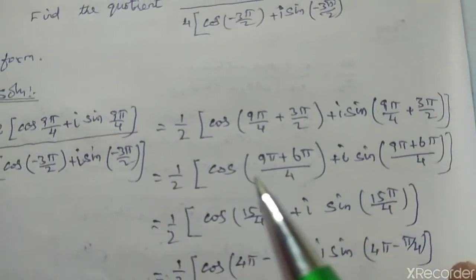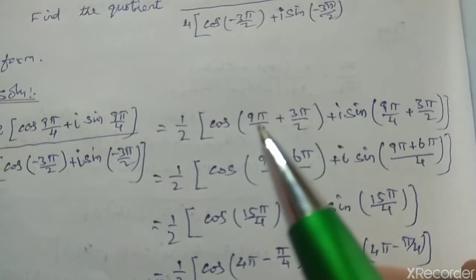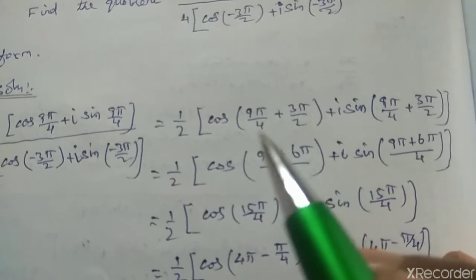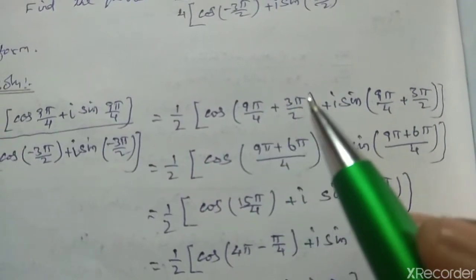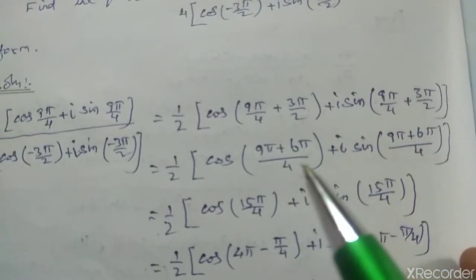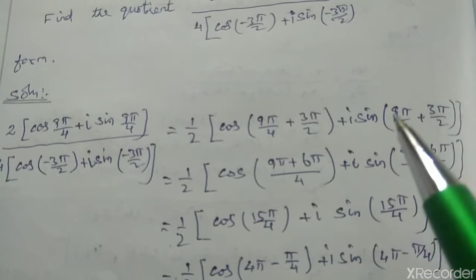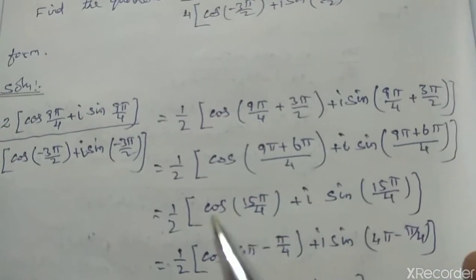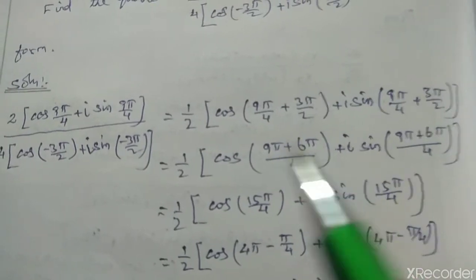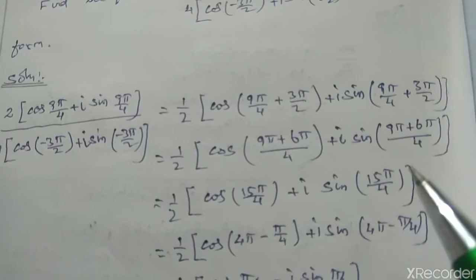This gives us 1/2 times cos of (9π plus 6π)/4, since the LCM is 4. Plus i sin of (9π plus 6π)/4. So we get cos(15π/4) plus i sin(15π/4).